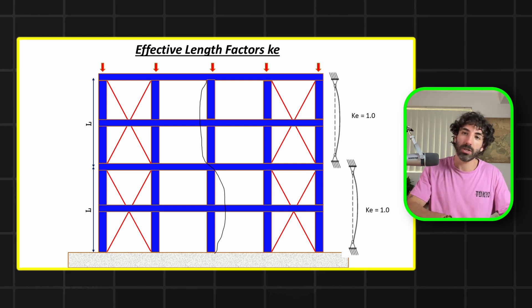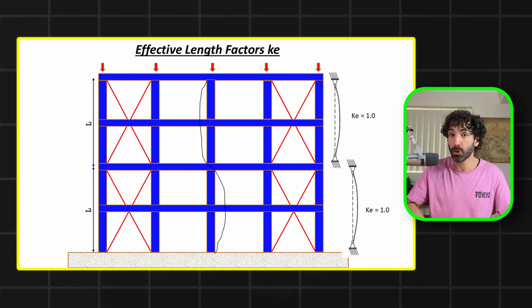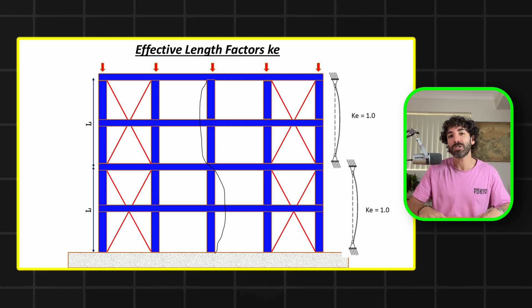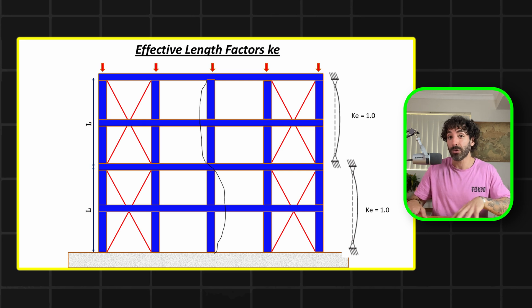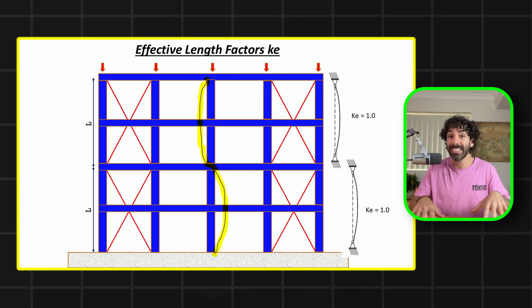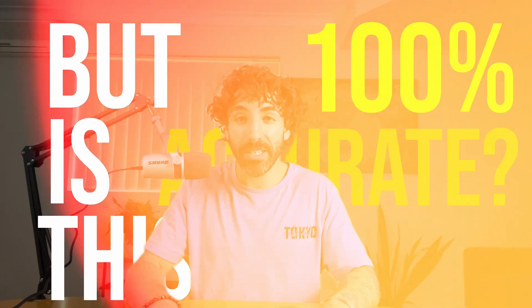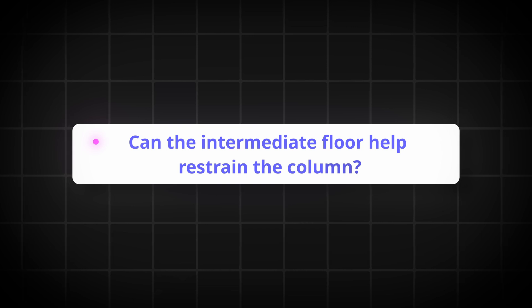The roof bracing helps distribute loads across the structure, tying all the columns together. If you are unsure, the safest approach is to assume the effective length as the height of two stories, because the column is effectively restrained at the bracing locations which are at each second story. If the intermediate floor does not provide lateral restraint, the column would buckle over two stories rather than one. This approach is conservative, but if the intermediate level is stiff enough to transfer lateral loads, it could reduce the effective length to just one story. To find an accurate value, you can run a buckling analysis in your software.